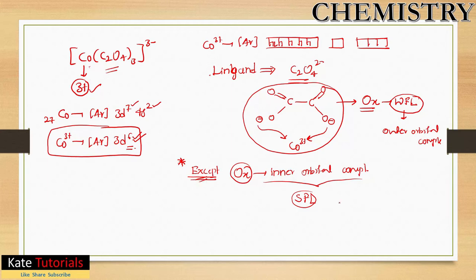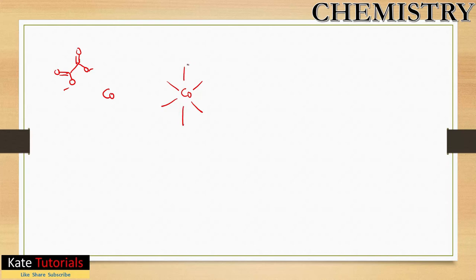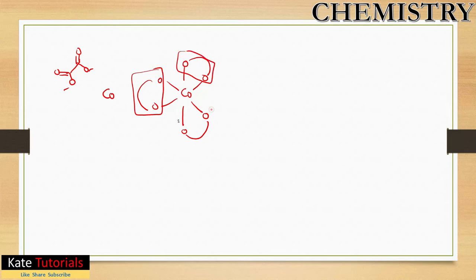Why does this happen? Cobalt is in the three plus oxidation state. Oxalate is bidentate, so each oxalate coordinates through two oxygen atoms. With cobalt at the center, each oxalate forms two coordinate bonds — one from each oxygen — and there are three oxalate ligands surrounding cobalt, forming a chelate ring structure.